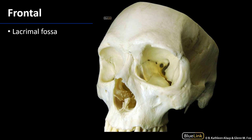We can start with the frontal bone, aptly named because it is the front of the neurocranium. We can see in the superior lateral surface of the orbit here there is a slight indentation. This indentation accommodates the lacrimal gland and it is thus called the lacrimal fossa.